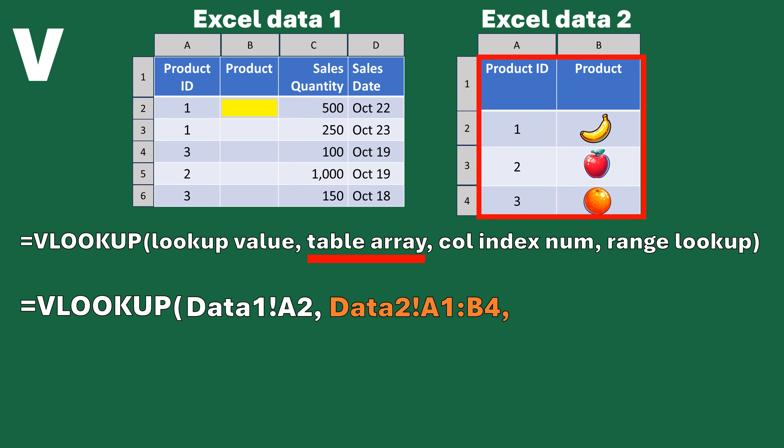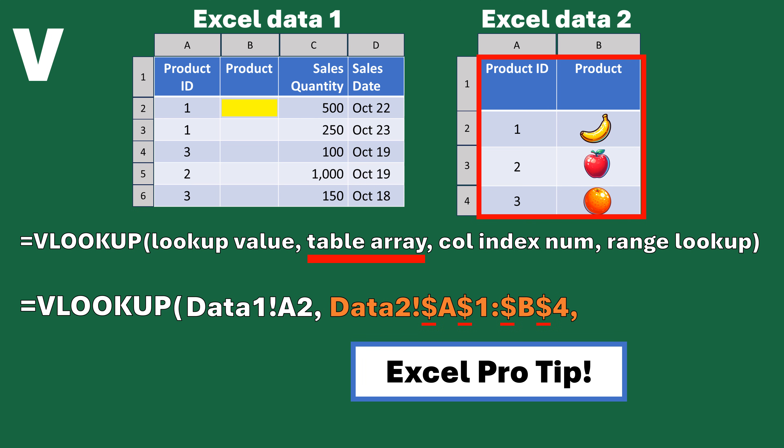I wouldn't leave the reference as A1 to B4 without locking it, because if I make copies of the formula, it could shift the range when copying down or to the right. I have to lock in those references, which is why you put dollar signs in front of the column and row references — A1 and B4 — for a total of four dollar signs. That's an Excel pro tip. Also, instead of manually typing the dollar signs, you can hit F4 and it will automatically add them. This ensures that when you copy the formula, it always references A1 to B4.